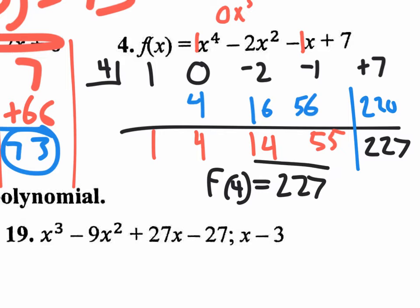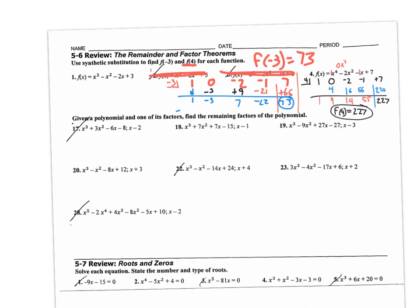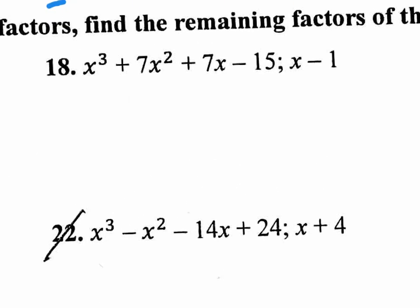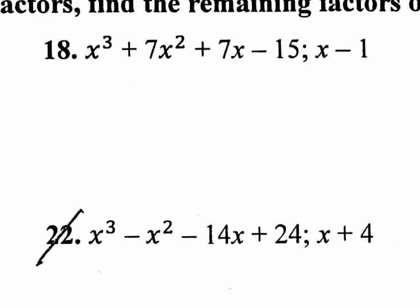The last number in synthetic substitution is your answer, so f of four equals 227. Moving on to number 18: they give you a cubic polynomial and one of its factors, and they want you to find the remaining factors. If it's a factor, the remainder should be zero when you divide.